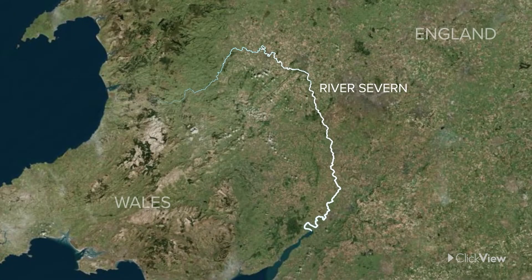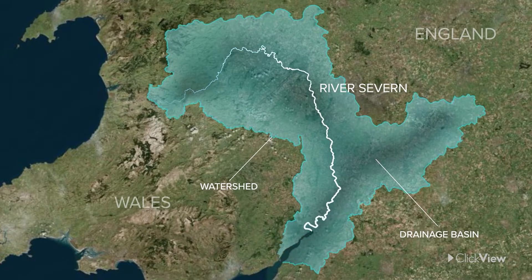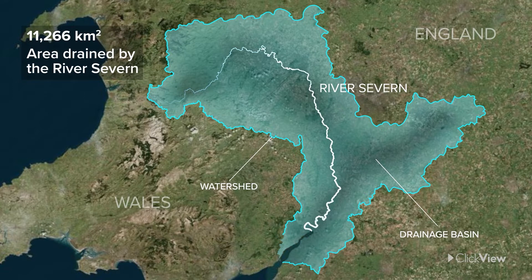The area of land drained by a river and its tributaries is the drainage basin. A watershed is the ridge of land on the border of a drainage basin that separates it from adjacent basins, determining whether rain and runoff flow into one river system or another. Looking at the River Severn, the watershed, highlighted here along the highland ridges, marks the rim of its drainage basin. The River Severn drains an area of 11,266 square kilometers.